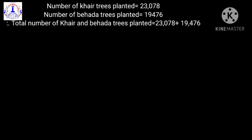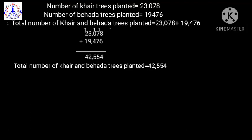We are going to find the total of Kher trees and Behera trees. So our first step is to add Kher trees and Behera trees: 23,078 plus 19,476. When we add, we get 42,554. Total number of Kher and Behera trees planted is equal to 42,554.